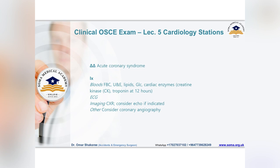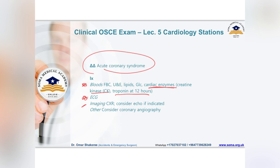For differential diagnosis, the main differential for chest pain is acute coronary syndrome, along with other diagnoses. Investigations to send include general investigations plus cardiac enzymes like creatine kinase and troponin at a few hours. ECG is the main investigation, along with echocardiography. You may also send the patient for echo and consider coronary angiography — these are the main investigations for acute chest pain.